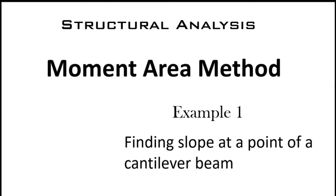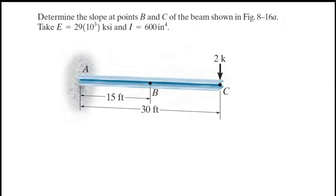In this video I'm going to show you how to find slope at the point of a cantilever beam using the moment area method. This is example one. The problem says: determine the slope at points B and C of the beam shown in the figure. E and I are given. The beam is marked A, B, and C, where A is a fixed support, C has a point load of 2k, the overall length is 30 feet, and B is at 15 feet.